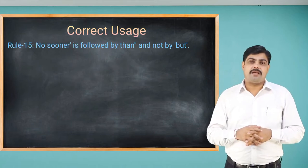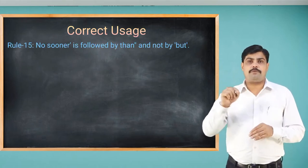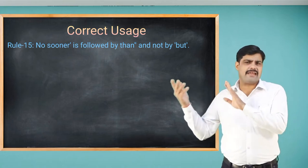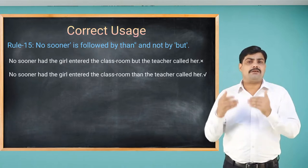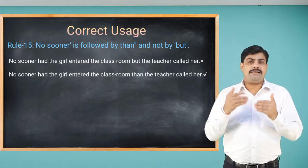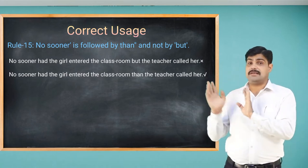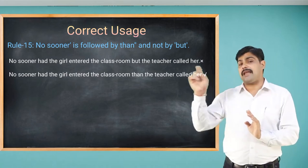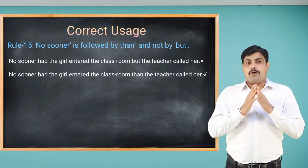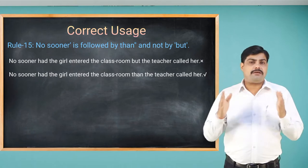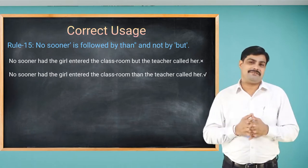Rule number 15: 'no sooner' is followed by 'than', and not by 'but' or any other conjunction. For example, 'No sooner had the girl entered the classroom but the teacher called her' is wrong. We must use 'than'. The correct sentence is: 'No sooner had the girl entered the classroom than the teacher called her.'